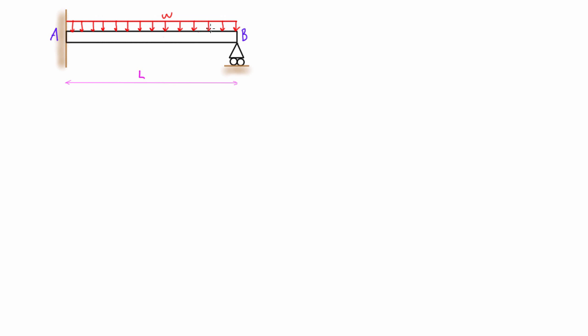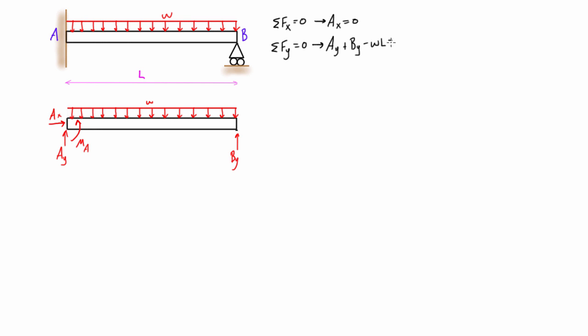When we look at this, this beam is statically indeterminate to the first degree. There's four unknowns and only three equations of equilibrium, so the only reaction that we can solve for right off the bat is Ax equals zero. But for the others we have Ay, By, and Ma, so we're left with two equations and still three unknowns.